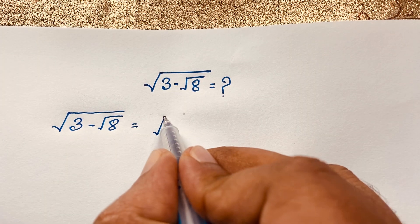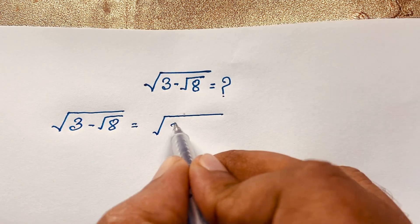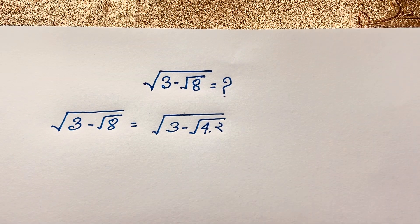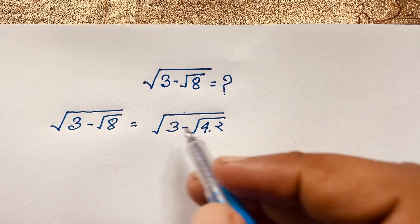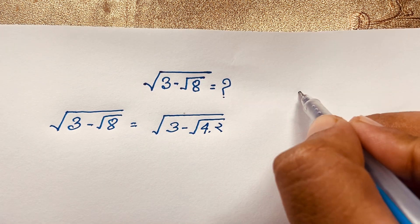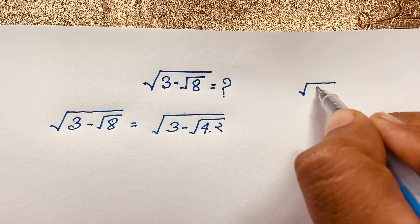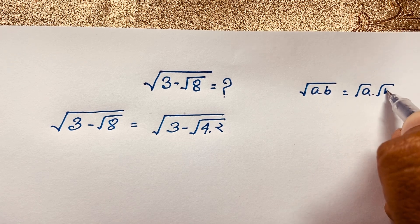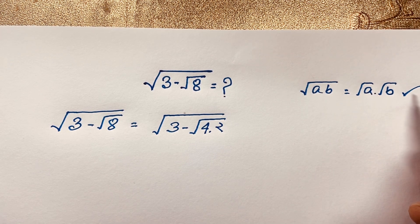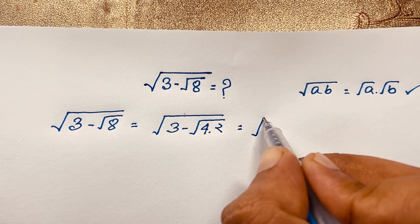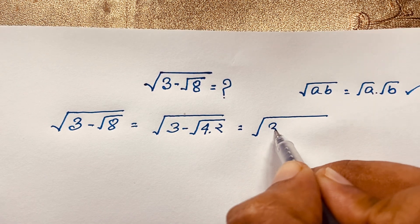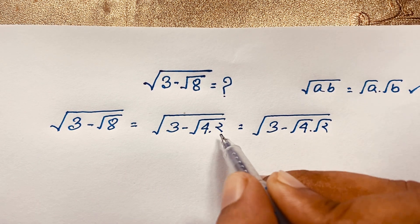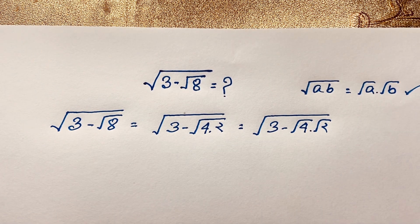You can easily see this expression contains square root of 3 and square root of 8. Now 8 equals 4 times 2, so square root of 8 is square root of 4 times 2. According to the formula square root of (a times b) equals square root of a times square root of b, this expression becomes square root of 3 minus square root of 4 times square root of 2.